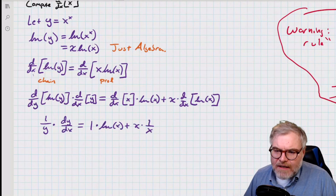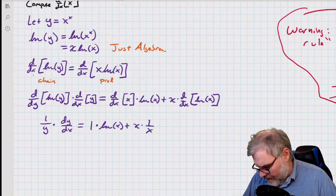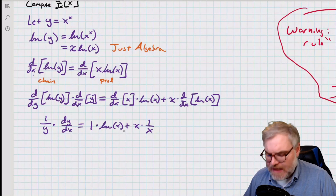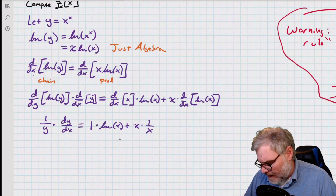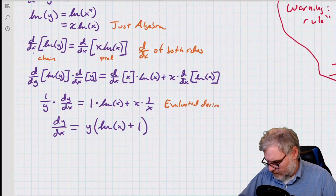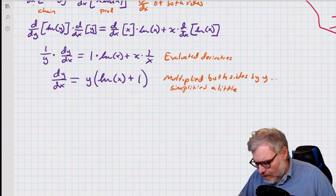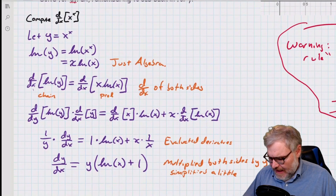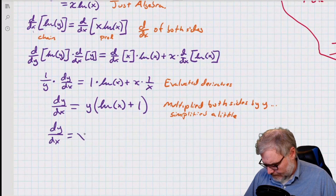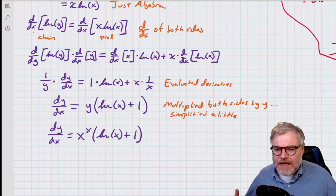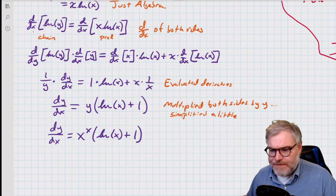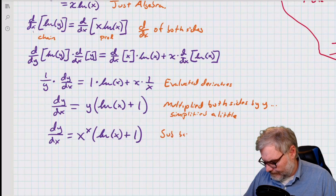I'm going to do a little simplifying. I created this y, so I'm going to multiply y to the other side and solve for dy over dx. I'm also going to simplify on the right side — get rid of the one, let the x's cancel and become just a one there. Now I created y, so I have to eliminate it: y was x to the x, so I substitute x to the x back in. And that's it — I now have an expression for the derivative: x to the x times the natural log of x plus one.